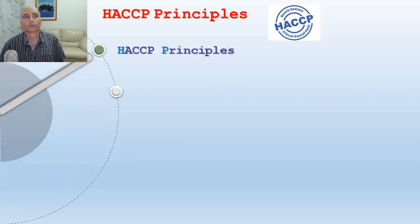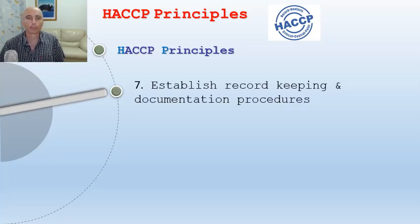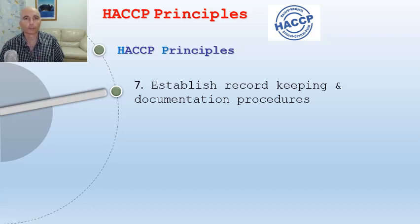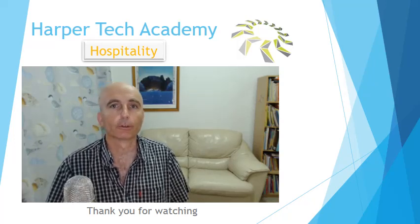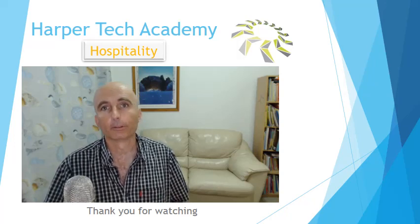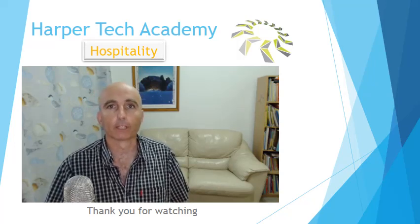The final HACCP principle, number seven, is record keeping and documentation procedures, which has to be tight. It ties to the regulations and is a way of ensuring that your food is safe for your customers. I hope you're starting to understand how legislation and environmental hygiene play a big part in the food production cycle. HACCP is a big step in ensuring safe food at every step. This was the introduction — there will be further analysis of the HACCP system later in the course.